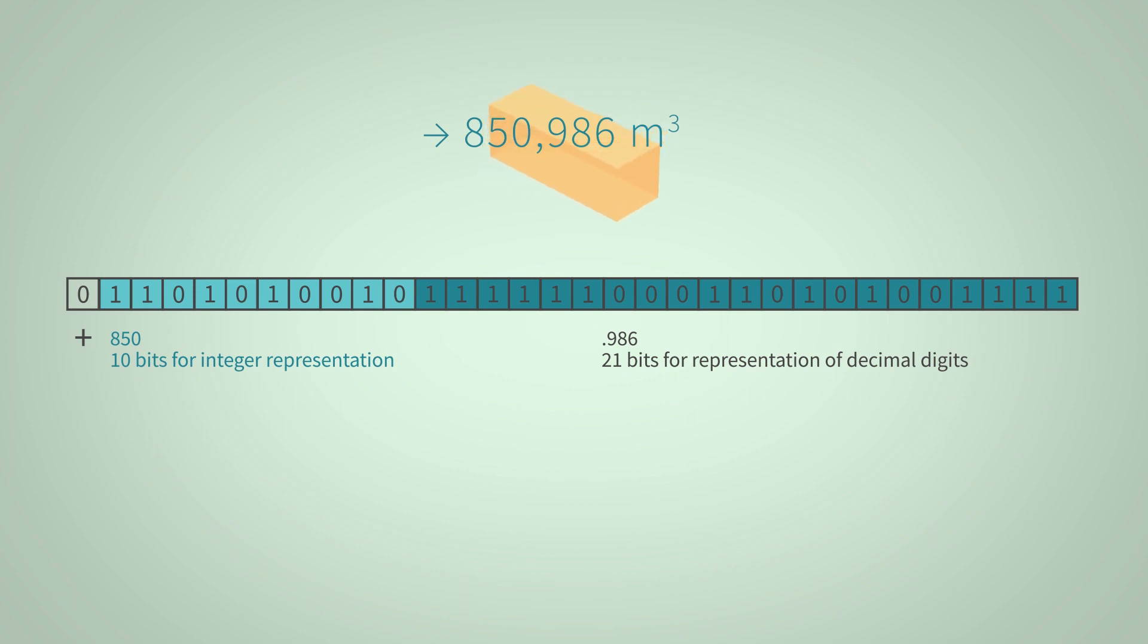In this way, we get a binary value that represents our physical size of the volume with a clearly defined accuracy, which can be used for further calculation. Since this conversion of a floating point number into the binary representation of a fixed point number must be performed in many applications with physically measured values, such as sensor values, the ECLib offers a macro for this conversion.